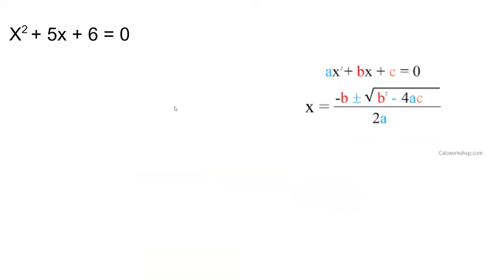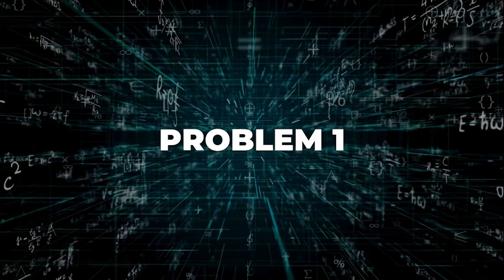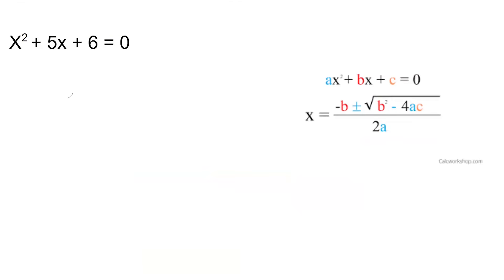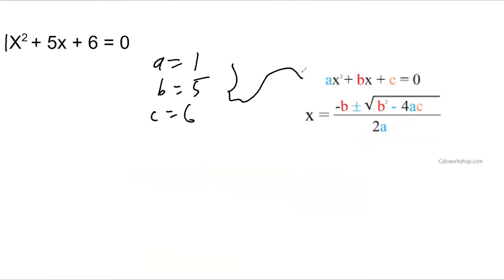I'll show you how this works. We'll start with some easy problems to give you some nice, clean answers. You could actually factor this, but let's use the quadratic formula. a is 1 — there's a 1 beside that x squared — b is equal to 5, and c is equal to 6. Now I just plug these into the formula.